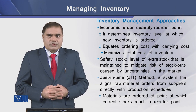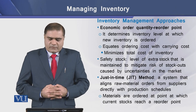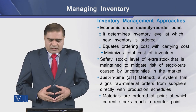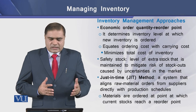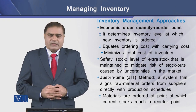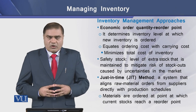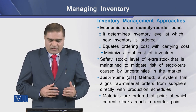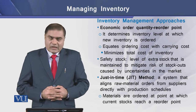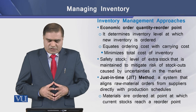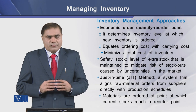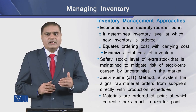Another approach is the safety stock, which is the level of extra stock maintained by the firm to mitigate the risk of stock-out caused by uncertainties in the market. There is also the Just-In-Time method, or JIT, which aligns new material orders from suppliers directly with the production schedule. Materials are ordered at the point when current stock reaches the reorder point, meaning JIT allows a firm to demand inventory only when it is required.